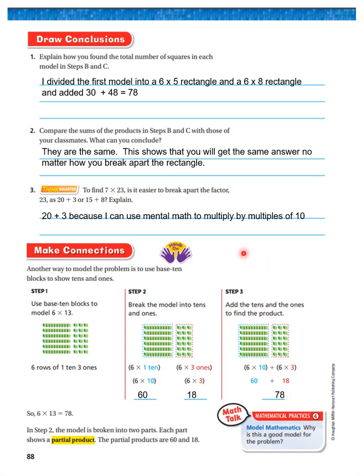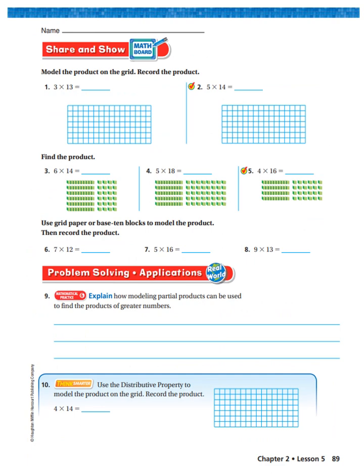Now boys and girls, they show you how to do this, but to be honest with you, you're not going to use the base 10 blocks to answer your questions. You're going to do it the way I showed you on the other slide. It says why is this a good model for the problem? Well, in step 2 the model is broken into two parts. Each part shows a partial product. The partial products are 60 and 18.